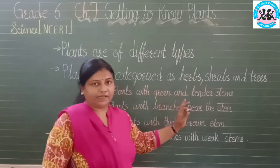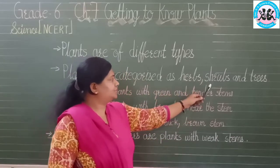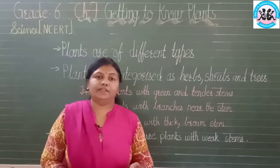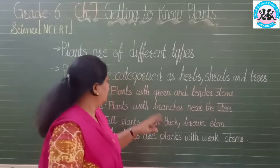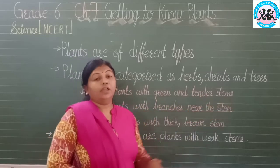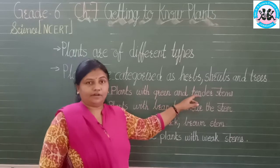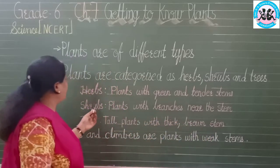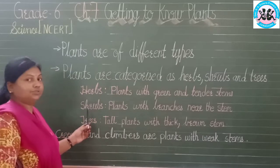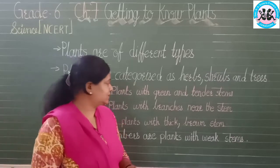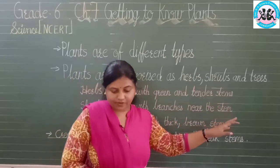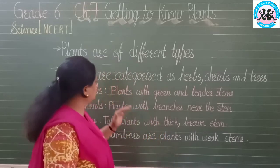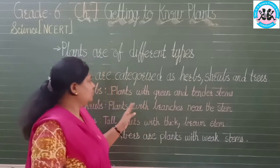Plants are categorized into three categories: herbs, shrubs and trees. Herbs are plants with green and tender stems — tender means which can be easily broken. Shrubs are plants with branches near the base of the stem. Their height is a little bigger than herbs.